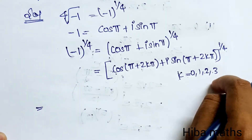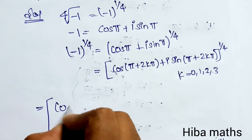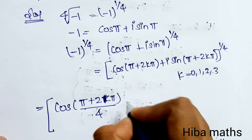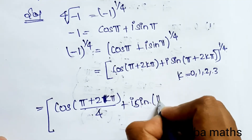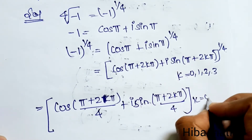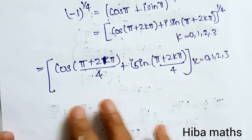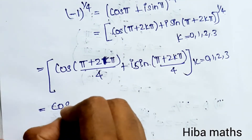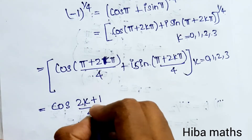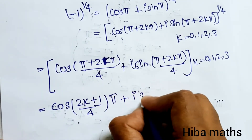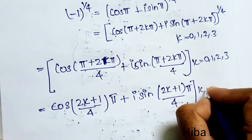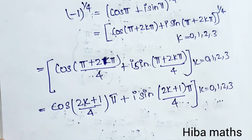Bringing the 1/4 inside, this gives cos((π + 2kπ)/4) + i sin((π + 2kπ)/4) for k = 0, 1, 2, 3. This simplifies to cos((2k+1)π/4) + i sin((2k+1)π/4), where k takes values 0, 1, 2, and 3.